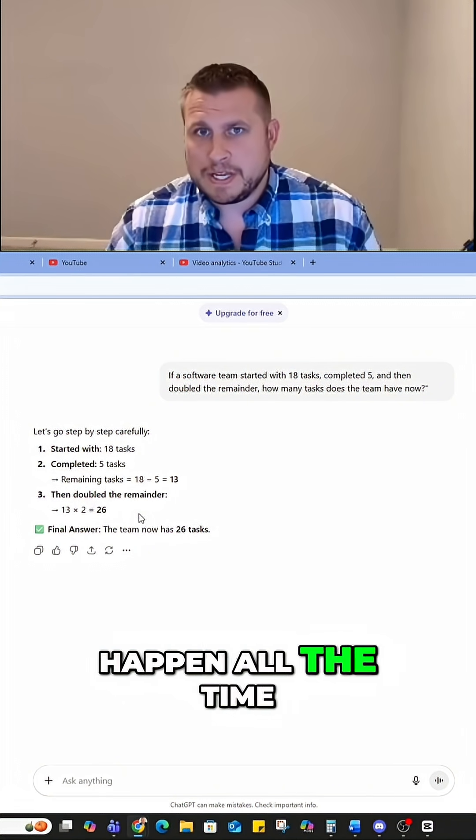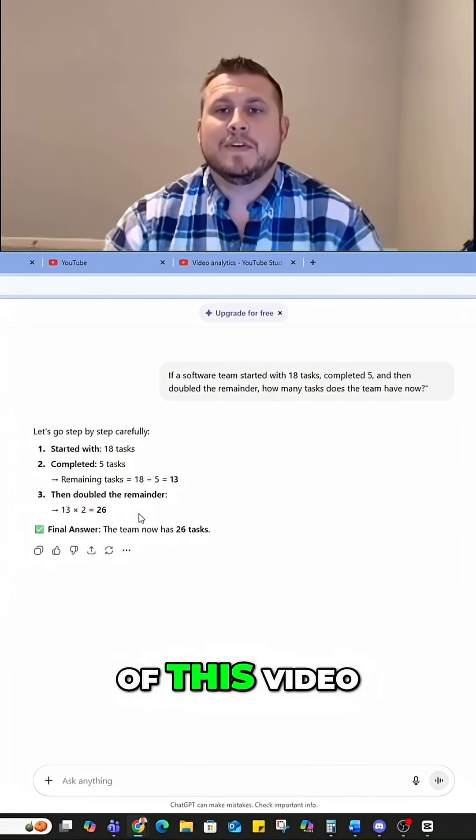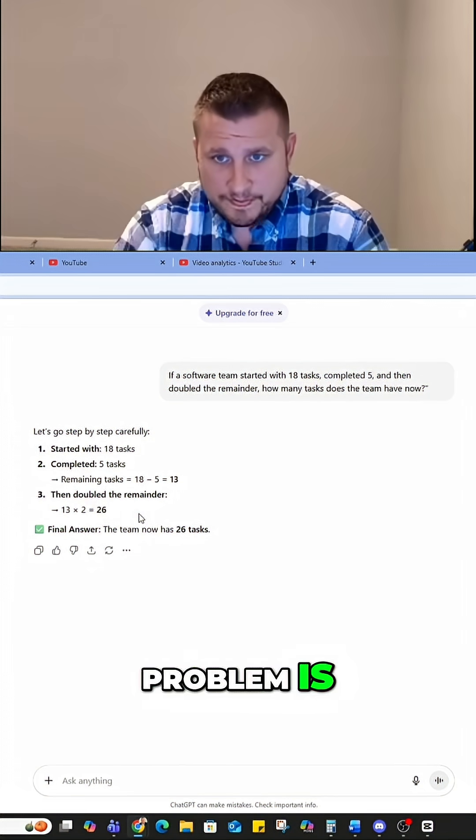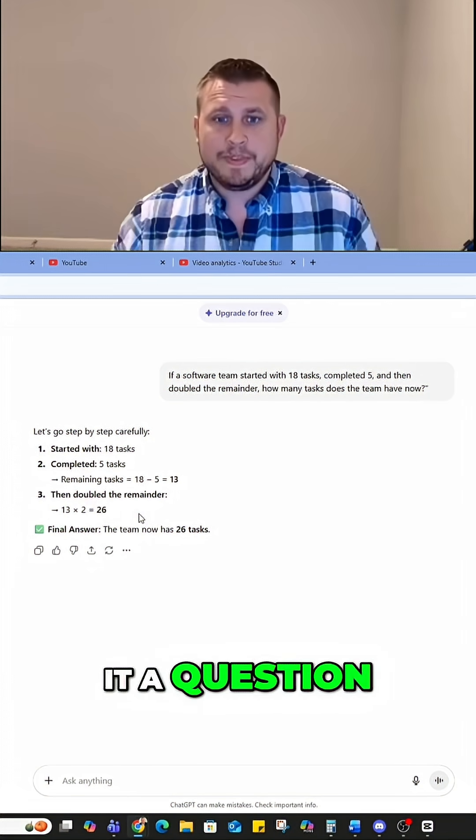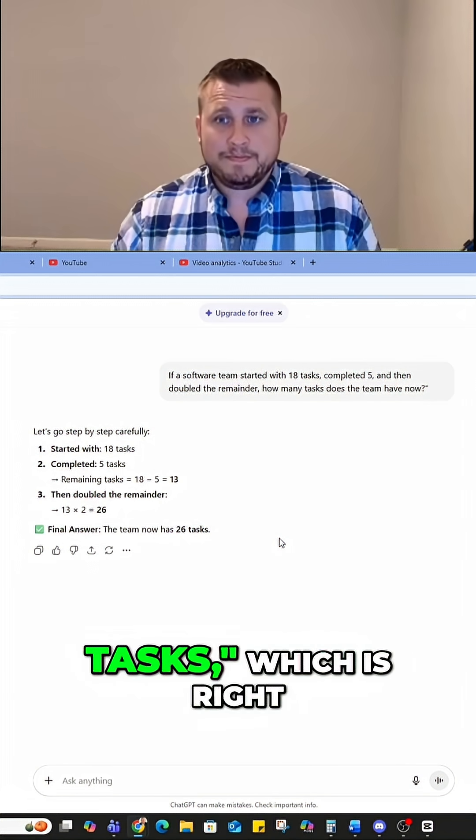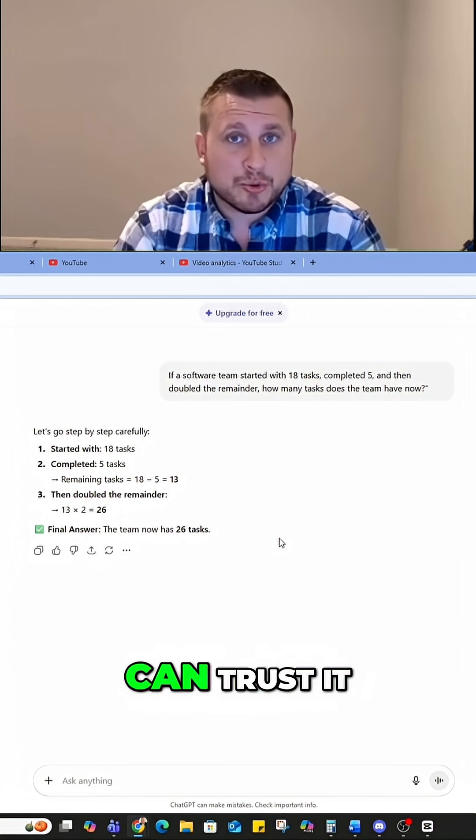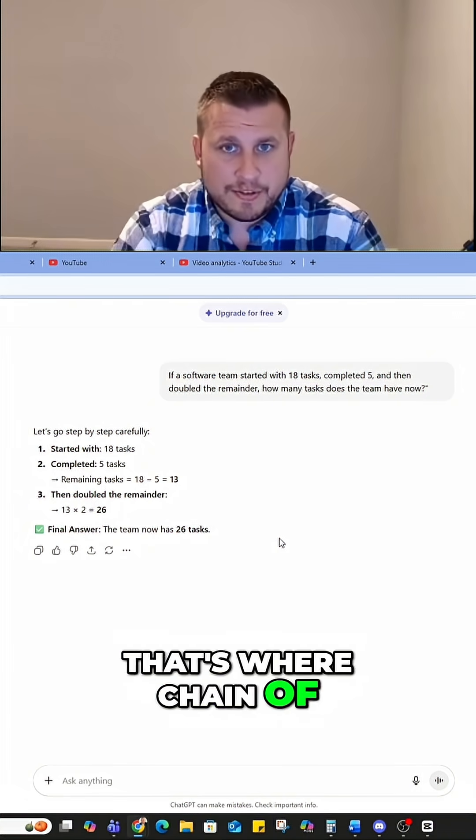So it may not happen all the time. Just for the sake of this video, I'm going to show you how, in case you just get an answer. Usually the problem is when you ask it a question, it'll just say the team has 26 tasks, which is right. But I want to know how it got there. I want to know what it did so I can trust it. And so that's where the chain of thought comes in.